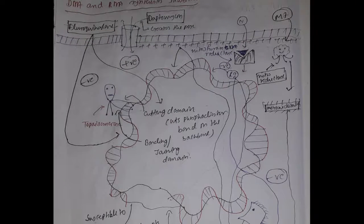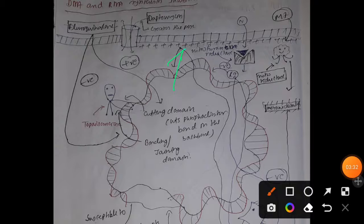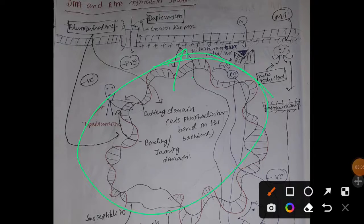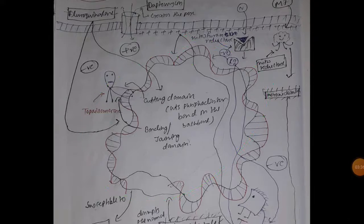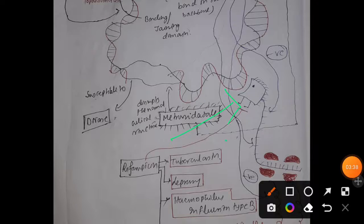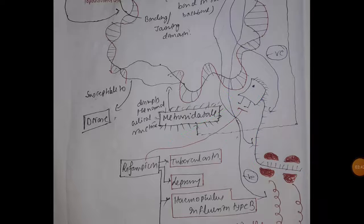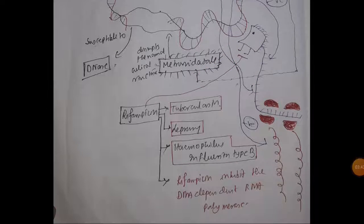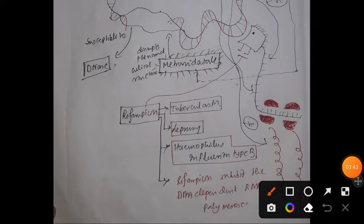Here is the cell membrane, and inside is our DNA. From DNA, with the help of DNA-dependent RNA polymerase, mRNA is synthesized. From the mRNA, ribosomes — shown here in red — facilitate protein synthesis.